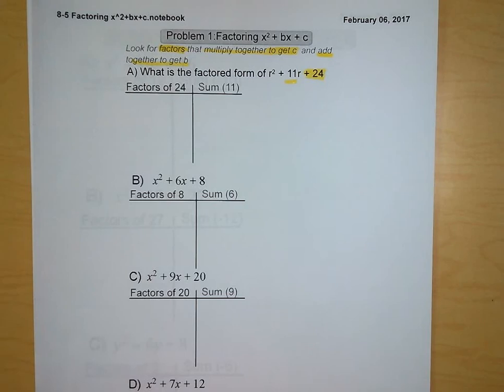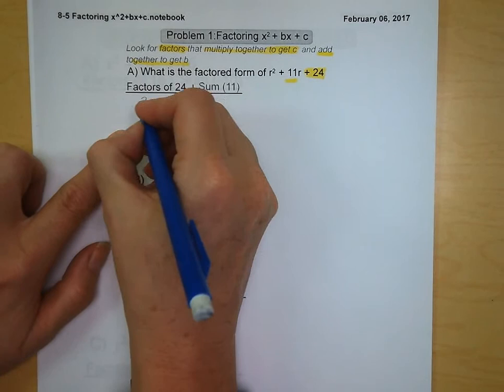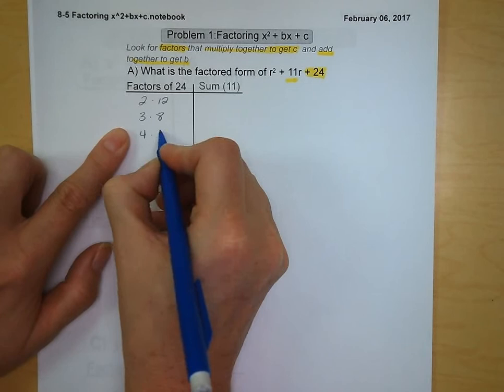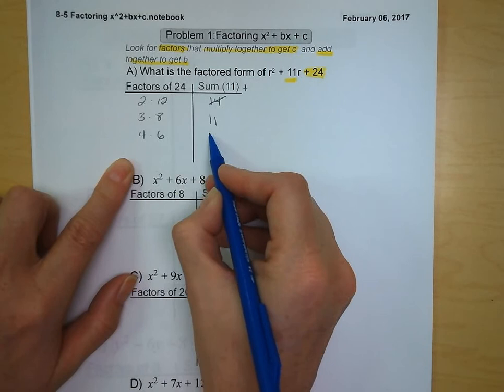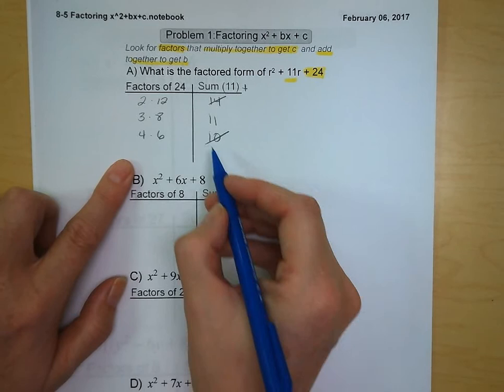In our notes today we set up a table where we're looking for factors of 24 — things that multiply to 24. We've got 2 times 12, 3 and 8, and 4 and 6. Looking at our sums: 12 plus 2 is 14, that's not our target. 8 plus 3 is 11, and 4 plus 6 is 10. Our target was a sum of 11, so our two factors are going to be 3 and 8.